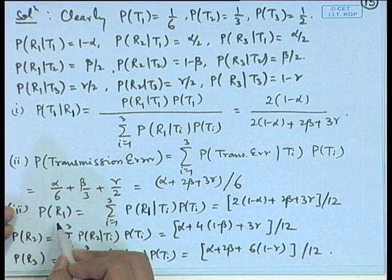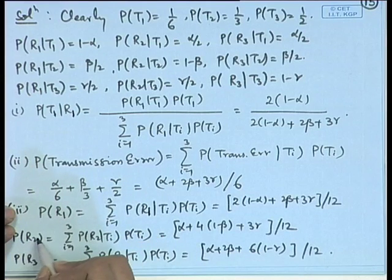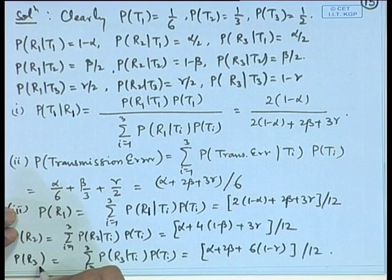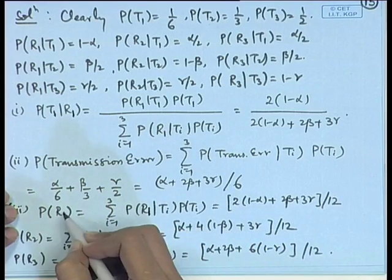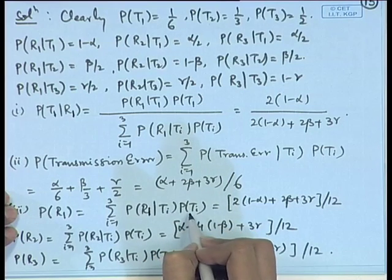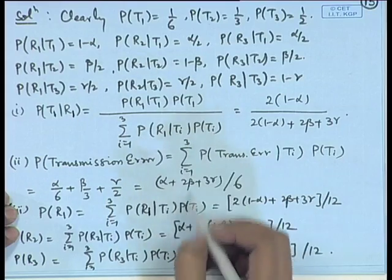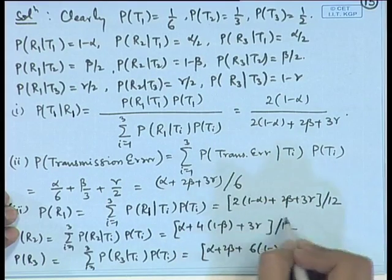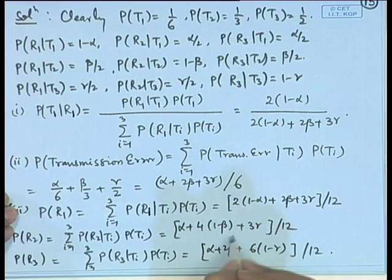The probability that digit 1 is received, digit 2 is received, or digit 3 is received is computed similarly. In each case, the digit received is a consequence of the digit sent, so the theorem of total probability is applicable and the given conditional probabilities can be utilized to get these expressions.